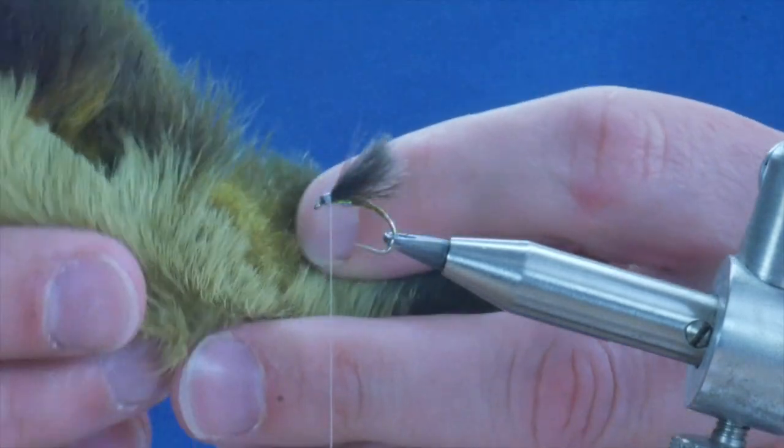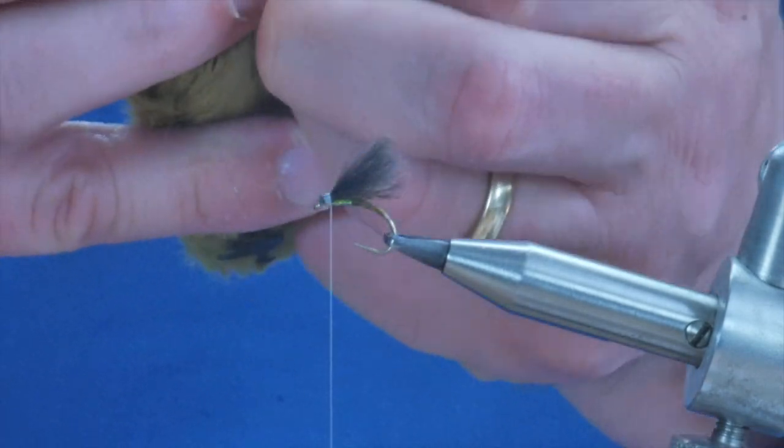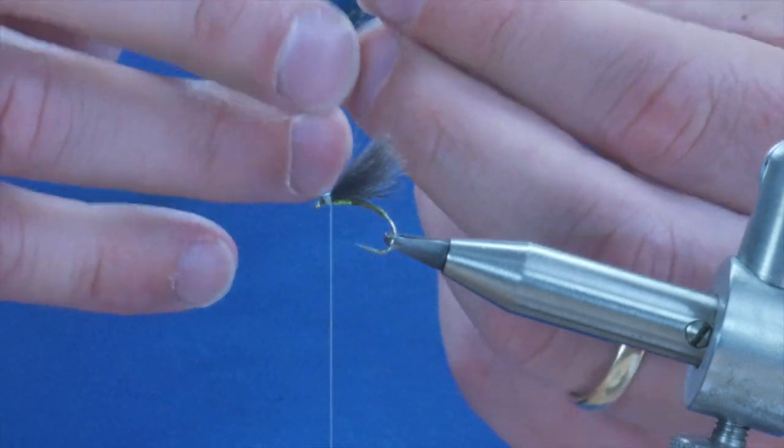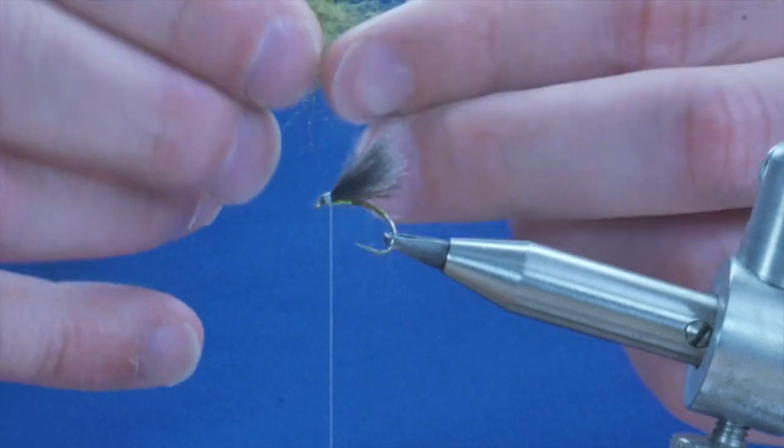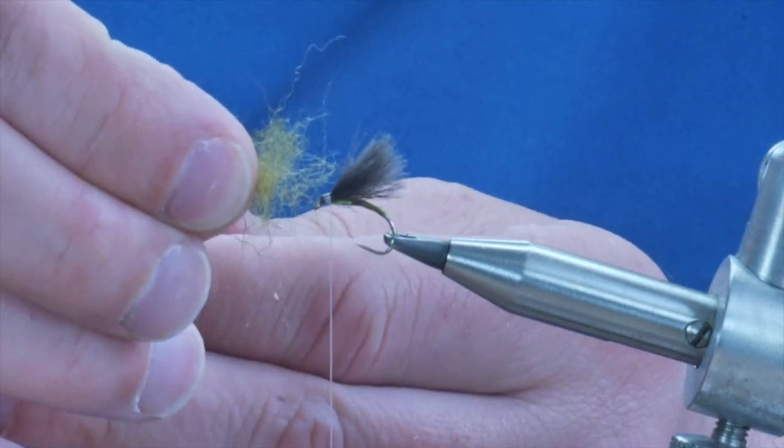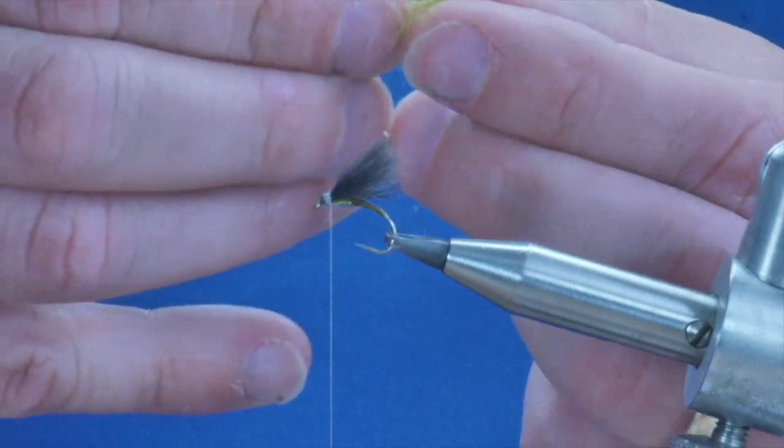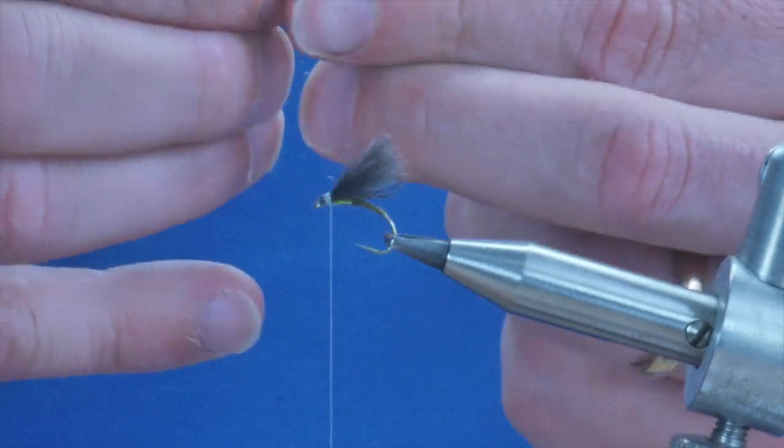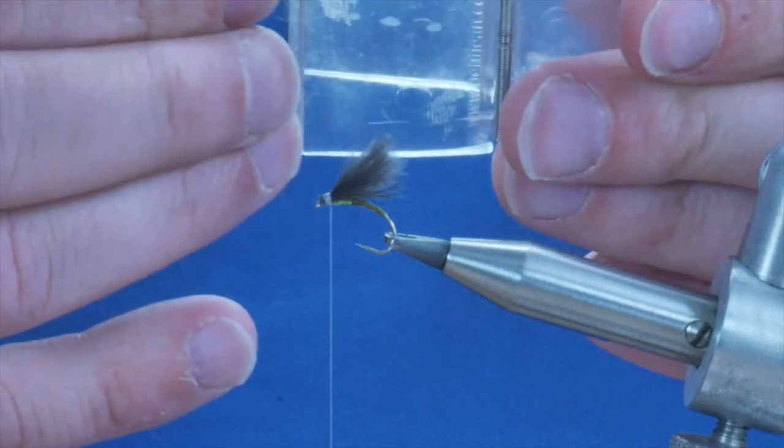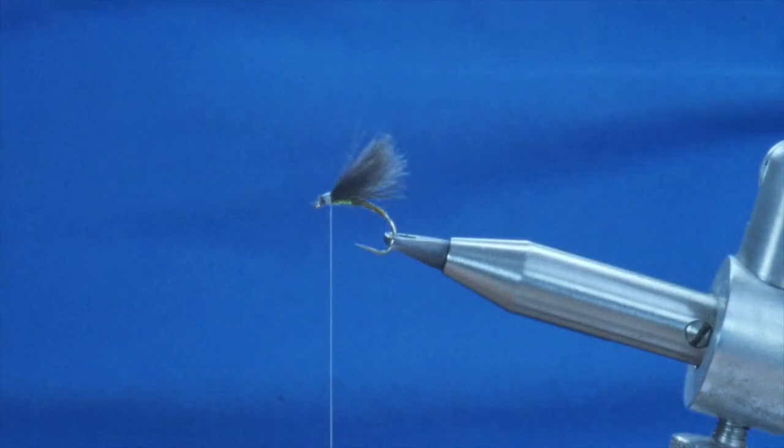And I'm going to take some of the really soft fibers from inside there. Just pull them out. As you can see, I've got some of the longer, more translucent fibers amongst that. And that's ideal because it's just what I want. I'm going to take my little clip and pop them in there.